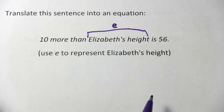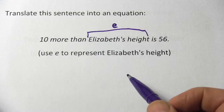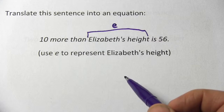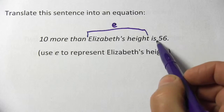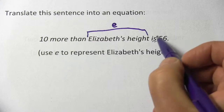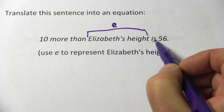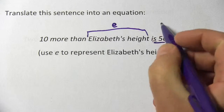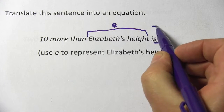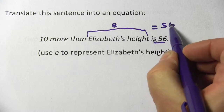One trick to keep in mind when you're trying to translate sentences into algebraic equations is to look for a verb like 'is' or 'are.' That's usually the equal sign. So this chunk right here — 'is 56' — is going to be equals 56.